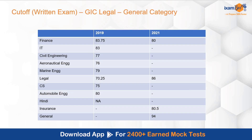Now let's move to the previous year cutoff for the written exam. In 2019, finance cutoff was 83.75, IT was 83, and for legal it was 70.25 — general category. Then in 2021, it was 80 for finance, 86 for legal, 80.5 for insurance, and 94 for general stream. Ab is saal sabhi ka exam general stream jaisa hi hai, so aapki cutoff oopar bhi ja sakti hai. Ho sakti hai common cutoff aaye, ho sakti hai har stream ki alag cutoff aaye — so be prepared accordingly.